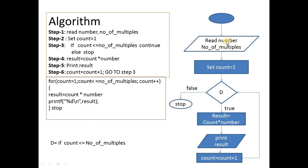For the algorithm flowchart: read number and number of multiples, set count = 1. Decision D: if count is less than or equal to number of multiples — if true, compute result = count × number, print result, then set count = count + 1, and go back to step 3. If the condition is false, stop.